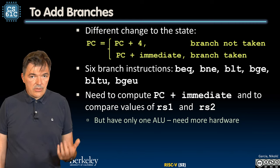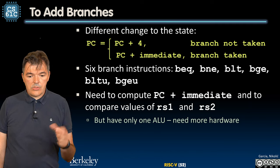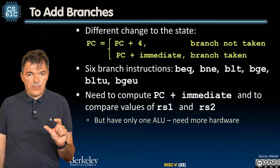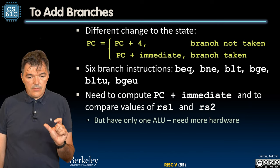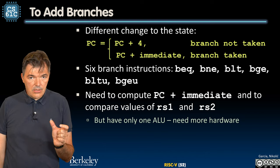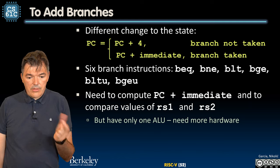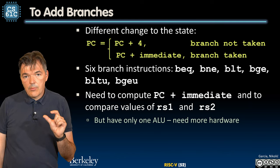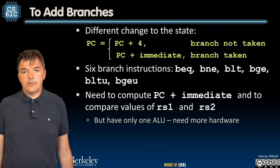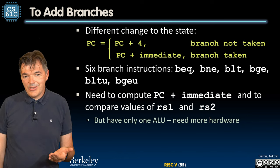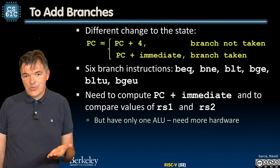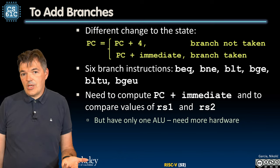So what does our data path need to do? It needs to evaluate the contents of RS1 and RS2. It needs to compare them and then needs to compute PC plus the immediate. But we have only one ALU that we have been able to use so far, so we need to add more hardware.